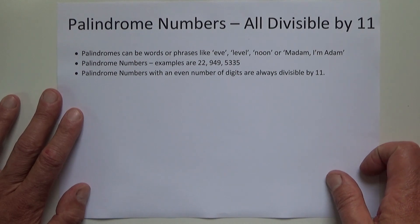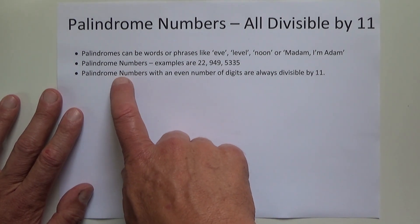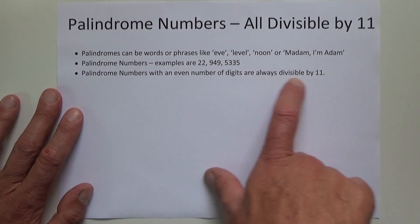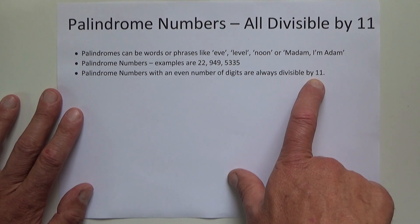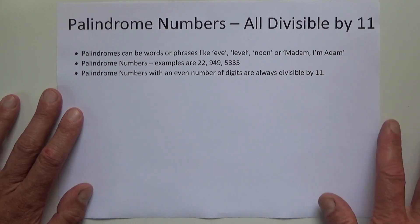Hi there, today I'd like to share with you an interesting fact about palindrome numbers, and that fact is that all palindrome numbers with an even number of digits are always divisible evenly by 11. That means when you divide by 11, the answer is always a whole number and there's no remainder.